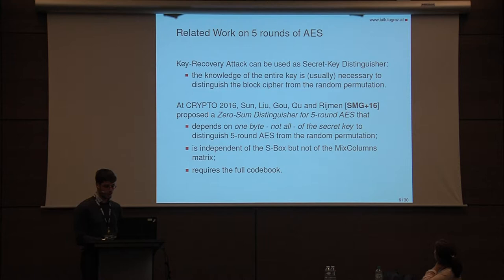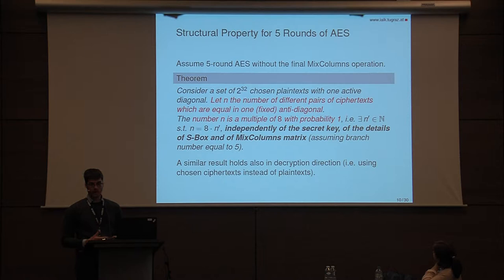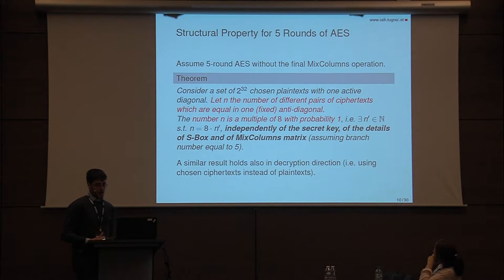Our property is the following. Assume for the moment that the final MixColumns is omitted. We consider a set of 2^32 plaintexts with one active diagonal — the same as before — and we consider the number of different pairs of ciphertexts which are equal in one fixed anti-diagonal. It is possible to prove that this number is always a multiple of eight, independent of the secret key, of the details of the S-Box, and of the MixColumns matrix. A similar property holds also when the final MixColumns is not omitted, and also in the decryption direction using chosen ciphertexts instead of plaintexts.